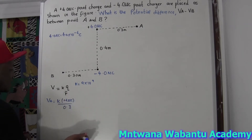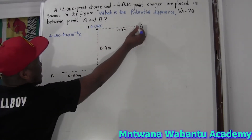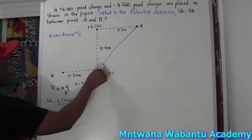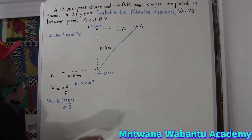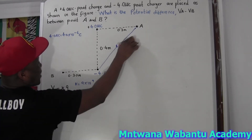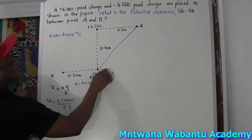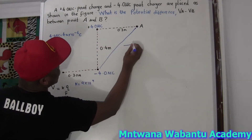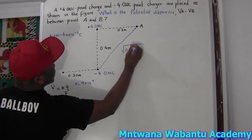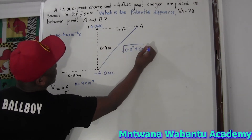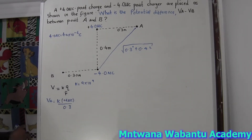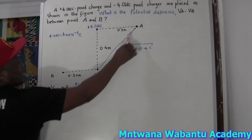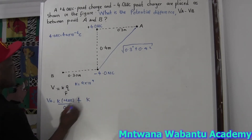From A, if you connect the points it forms a triangle — this is the hypotenuse. Using the Pythagorean theorem, to get the distance from A to the other coulomb charge, since A is connected to two charges, I say the distance is square root of 0.3 squared plus 0.4 squared. So from A to the first charge we have that already, plus we're going to add k for the second charge.